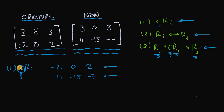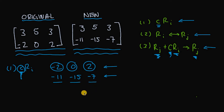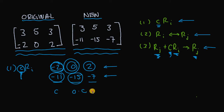This nonzero constant c has to be the same value for all elements in the row. We need to multiply negative two, zero, and two by c to obtain negative 11, negative 15, and negative seven. Rule one doesn't apply because although we could find a constant c to turn negative two into negative 11, zero times any constant is always zero — so there's no way to get negative 15. Rule one doesn't apply.